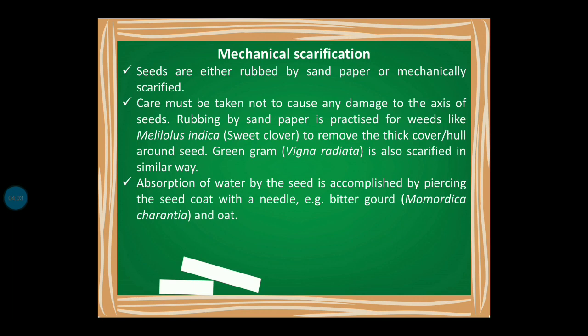Absorption of water by the seed can also be facilitated by piercing the seed coat with a needle. So in this case, instead of rubbing the seed coat, we pierce it with a needle so that water absorption becomes easy. This method is applicable for bitter gourd and also for oat.